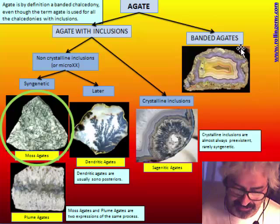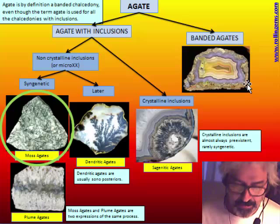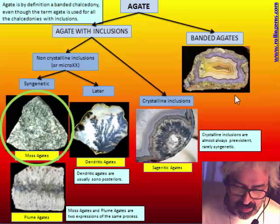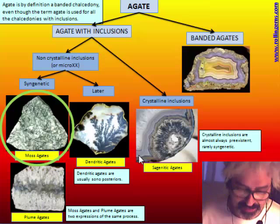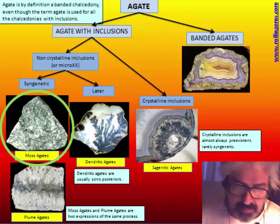But usually people refer to agate as all chalcedony that can be nodular or in vein, that have other inclusions inside and not necessarily banded. So moss agate, plume agate, dendritic and sagenitic are chalcedony — not banded, but chalcedony with inclusion that are usually called agate.